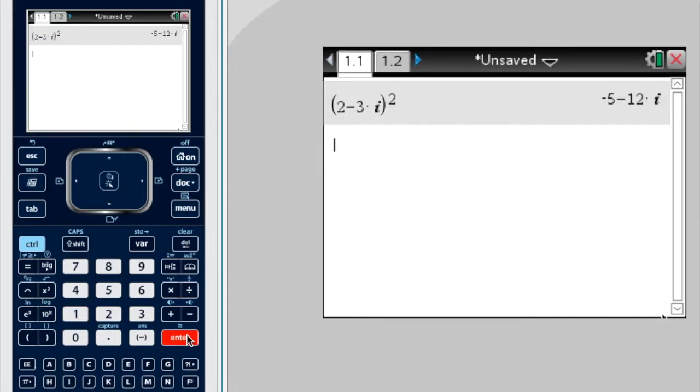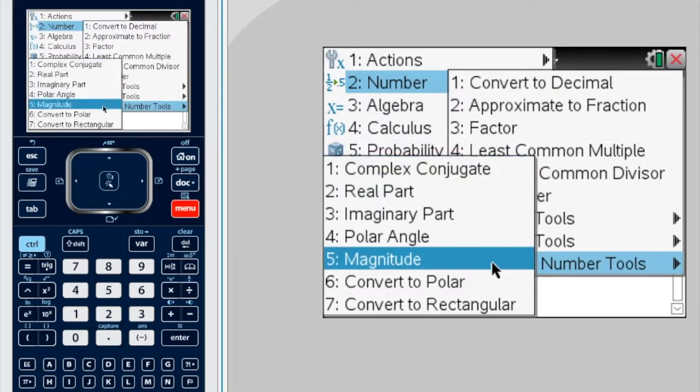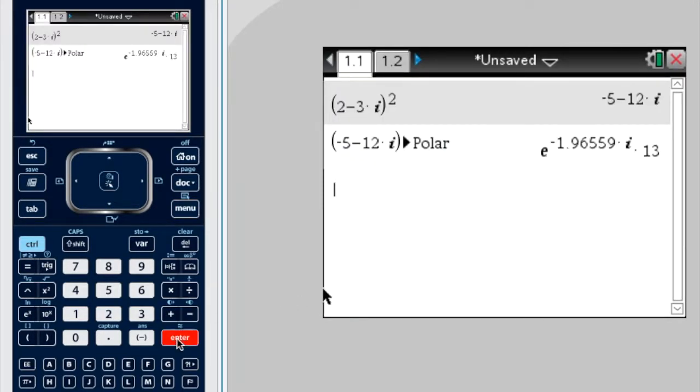Now, if I decide, actually I want that in polar form too, I might just grab it, either I can grab the answer or the expression, I might grab the answer, and then I can always convert it to polar form, like that. So that's the polar form with angle negative 1.96559, and modulus 13.